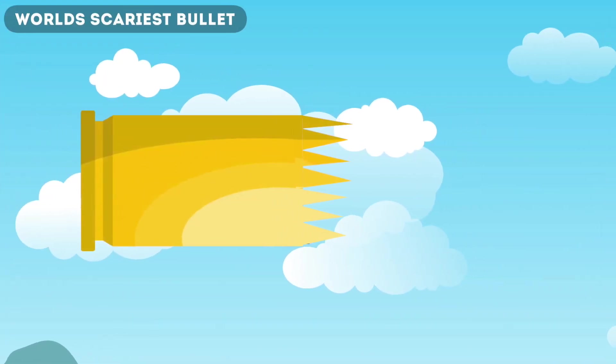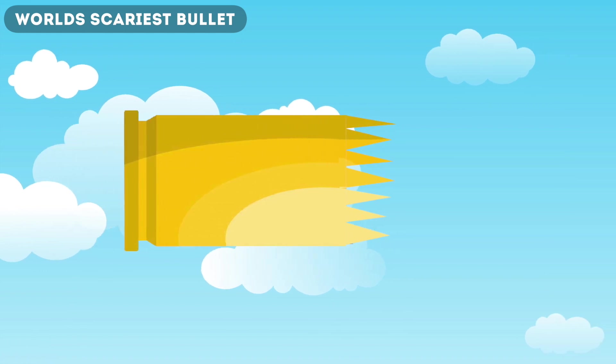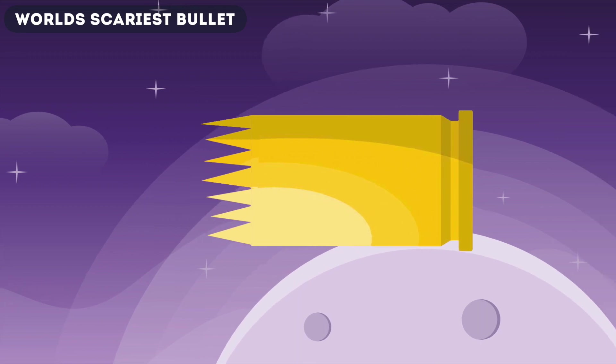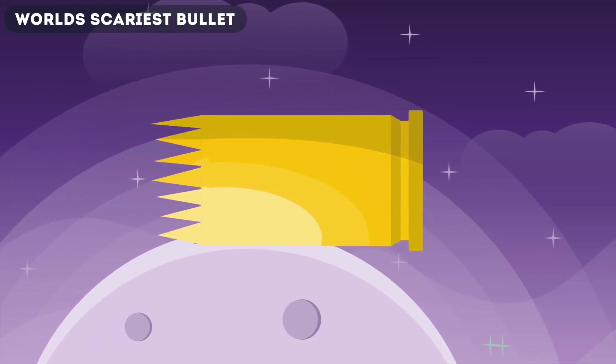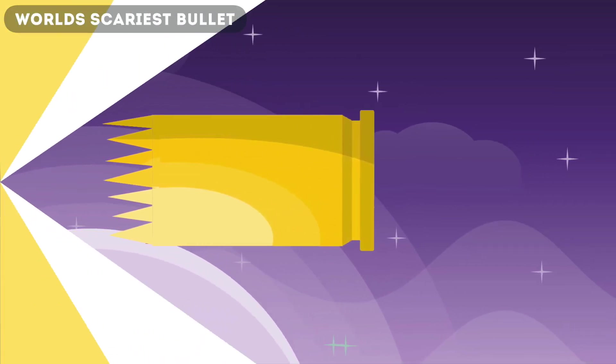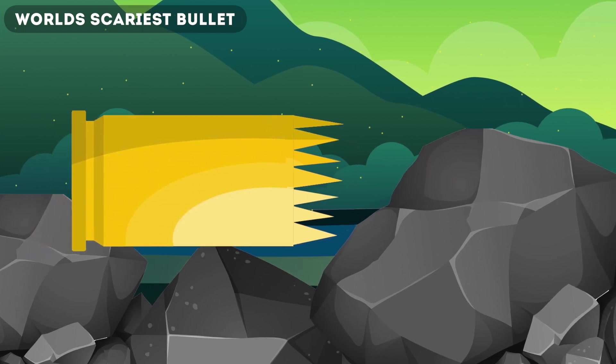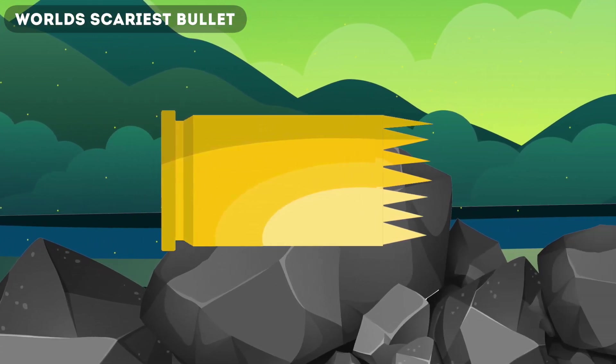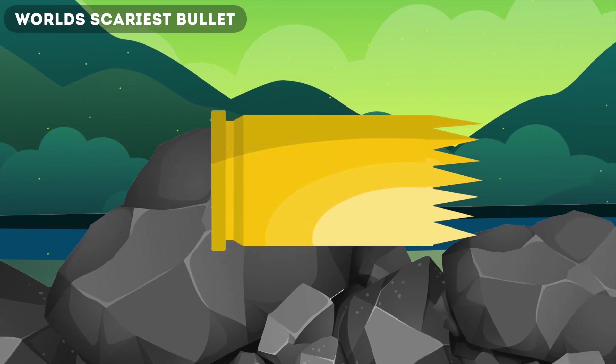Well, it sure is for some bullets, but not the RIP. The RIP is the most scary and dangerous bullet known to man today. It stands for radically invasive projectile, or RIP for short. This bullet is super strong and can go through rock, plywood, metal, or glass.